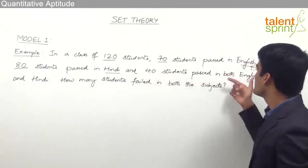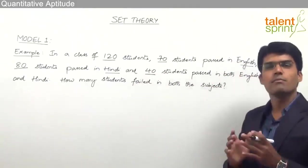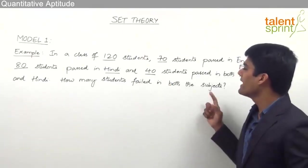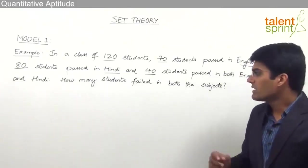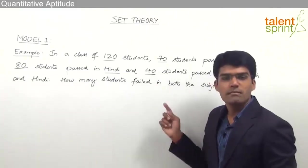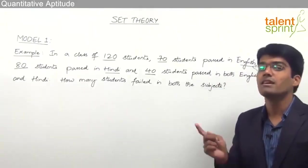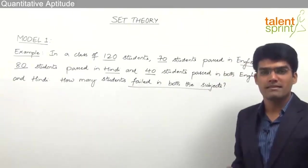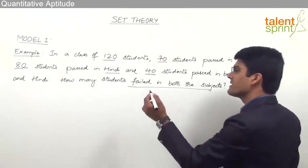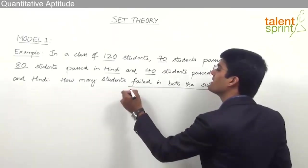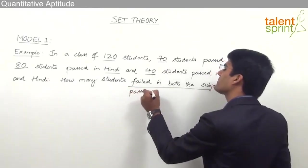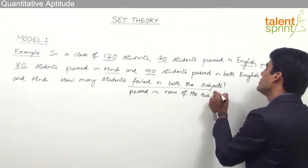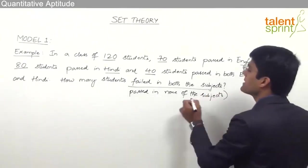40 students passed in both English and Hindi, meaning 40 is the count who passed in both subjects. How many students failed in both subjects? Try to understand: failed in both subjects means the number of students who passed in none of the subjects. Whether we say failed in both subjects or passed in none of the subjects, it means the same.